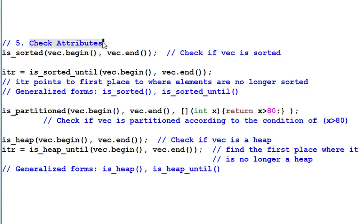Number 5. Check attributes. Is sorted. Check if this range of data is sorted. Is sorted until will find the first place where the data is no longer sorted. They both have generalized form of the same name.